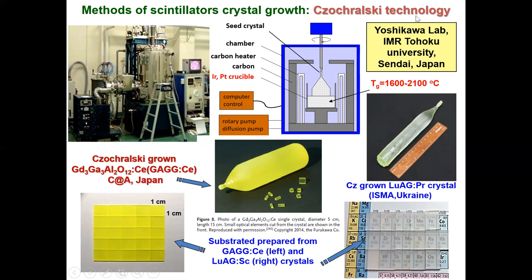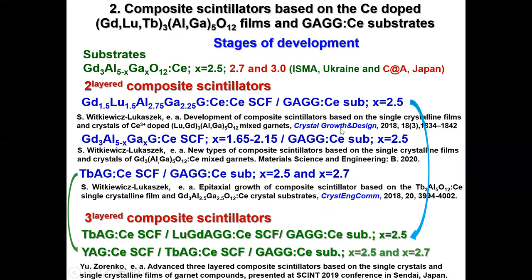We collaborate with Professor Yoshikawa's group from Tohoku University, who can produce substrates with different gallium content. We also work with Professor Yoshikawa's group from the Institute of Scintillator Materials in Ukraine, which produces crystals of LUAG doped with praseodymium or scandium ions and can produce substrates from these crystals. We consider composite scintillators based on mixed garnet films containing gadolinium, lutetium, terbium, aluminum, and gallium cations, and GGG substrates with gallium content between 2.5 and 3.0, produced at ISMA in Ukraine and Tohoku in Japan.